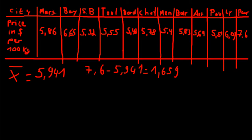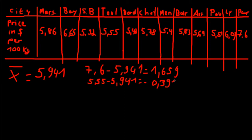Take another example: Toulouse. The price was $5.55 per 100 kg of wheat. So 5.55 minus 5.941 is equal to minus 0.391.